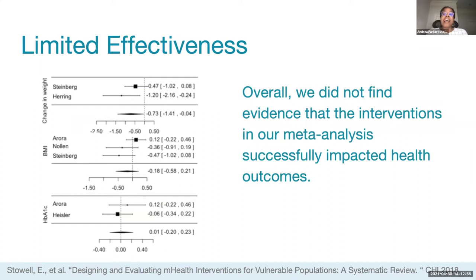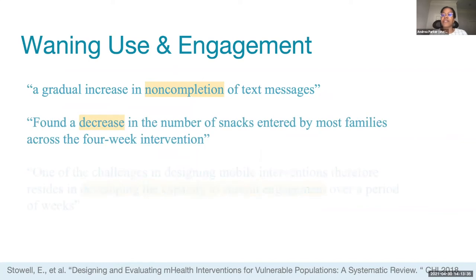Our meta-analysis assessed how well the randomized controlled trials in our corpus improved the health of study populations. While we identified moderate success in weight change interventions, this was largely due to one study that did particularly well. For other outcomes such as body mass index or HbA1c — a measure of how well blood glucose is being controlled — the studies did not demonstrate a positive effect. Overall, we did not find evidence that the interventions successfully impacted the health outcomes of these marginalized and underserved groups.